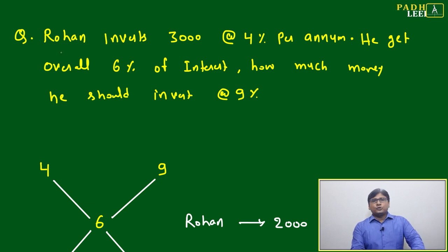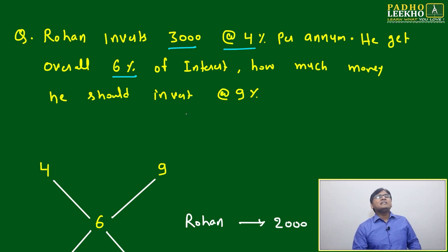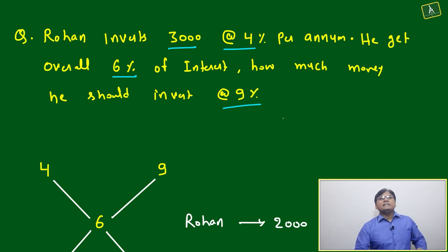Let's look at one question to clarify the thoughts. Rohan invests rupees 3000 at the rate of four percent per annum. He gets overall six percent of interest. How much money should he invest at the rate of nine percent?